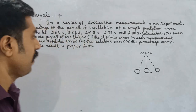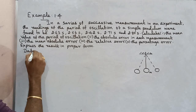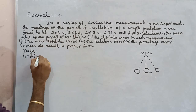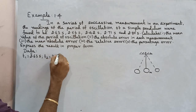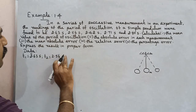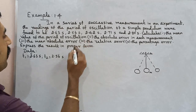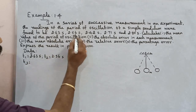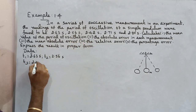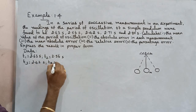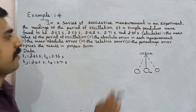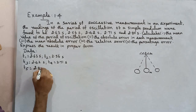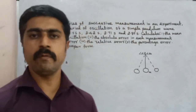Very simple. First, the data: t1 is equal to 2.63 seconds, t2 is equal to 2.56 seconds — correct unit. t3 is equal to 2.42 seconds, t4 is equal to 2.71 seconds, then last t5 is equal to 2.80 seconds. So solution — calculate.